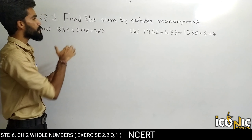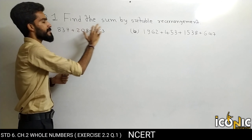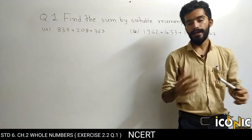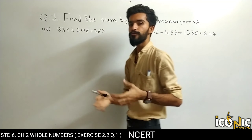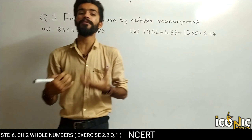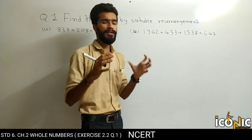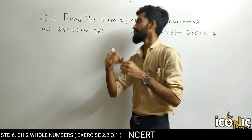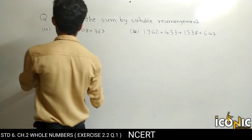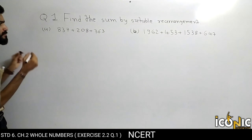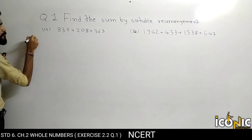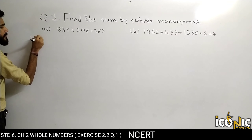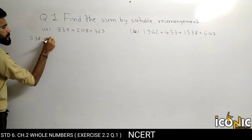Hello students, my name is Neti Gadwin. We are studying Chapter Number 2, Whole Numbers, Exercise 2.2, Question Number 1. In question number 1 we have to find the sum by suitable rearrangement — yani, jo bhi numbers diye gaye unka sum karna hai, by suitable rearrangement.